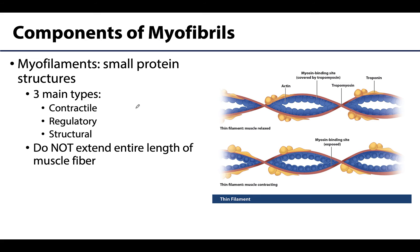Myofilaments make up the myofibrils and are proteins. There are three major types: contractile proteins, which generate force during contraction; regulatory proteins, which switch the contraction process on and off; and structural proteins, which keep structures in proper alignment, link myofibrils to the sarcolemma, and play an important role in the extensibility and elasticity of muscles. When you combine all these proteins together, you have a myofibril. The smaller myofilaments do not extend the entire length of the muscle cell, but the myofibril does.